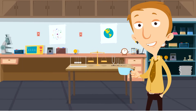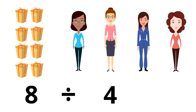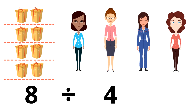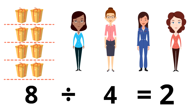Let's try another example of division. Let's say there are eight presents and there are four women, and we want each of the women to get the same amount of presents because we want it to be fair. Notice the division sign — we are going to divide or split up eight by four. Remember, to divide is to split up. Let's split these presents up into four equal groups. How many presents does each woman get? Two — each woman gets two presents.